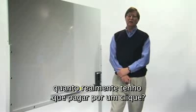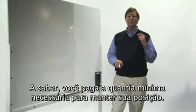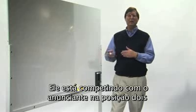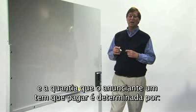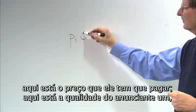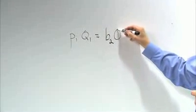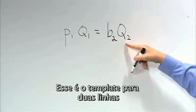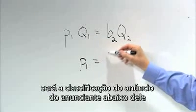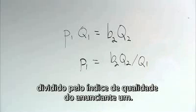Now we know how the ads are ranked — but how much do you actually pay for a click? We use the same logic as in the simple example: you pay the minimum amount necessary to retain your position. So think of the advertiser in position 1, competing with the advertiser in position 2. The price advertiser 1 has to pay, divided by the quality of advertiser 1, is just enough to beat advertiser 2, who bids B2 and has quality level Q2. Solving that equation, the actual CPC for advertiser 1 is the ad rank of the advertiser below him divided by the quality score of advertiser 1.